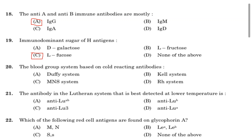Twentieth question: the blood group system based on cold reacting antibodies. Option A: Duffy system. Option B: Kell system. Option C: MNS system. Option D: RH system. Answer is Option C, MNS system.